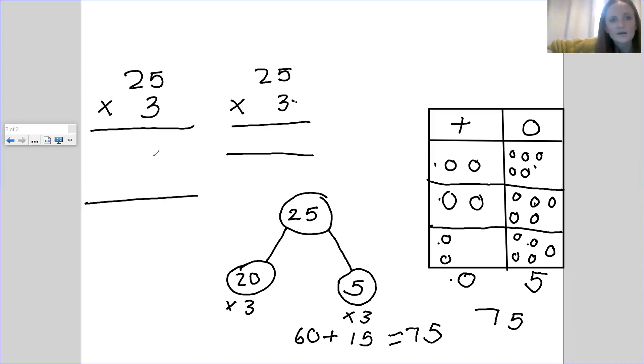With this one here, it is showing you, so the first one would be 5 times by three, because we're timesing it into there. Then we times it into there. So it would be 20 times by three. 5 times 3 is 15, 20 times by three is 60. And then you add them together and you get a total of 75.